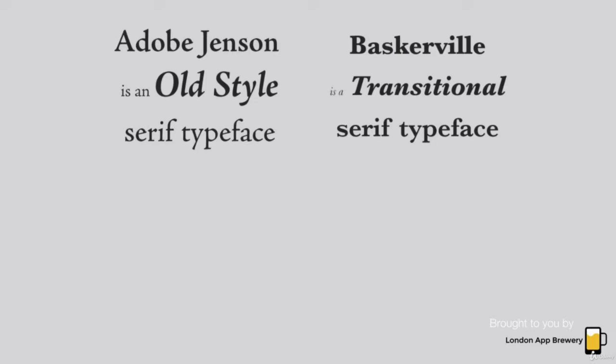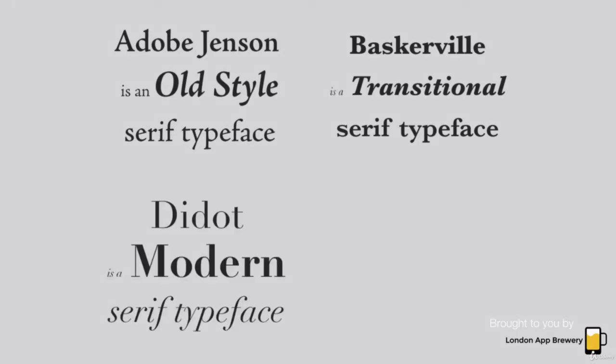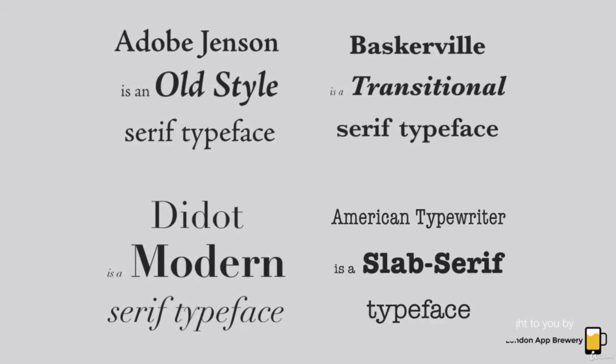Coming even further into modern times, you have the modern serif typeface family. One example is Didot, which is the typeface you see on the title of Vogue magazine. It's an incredibly modern yet classy looking typeface.